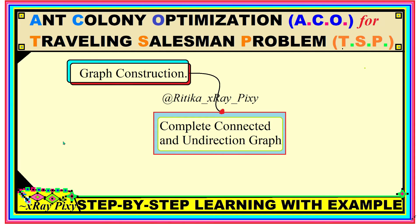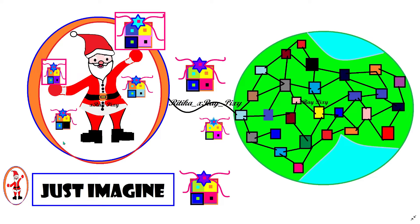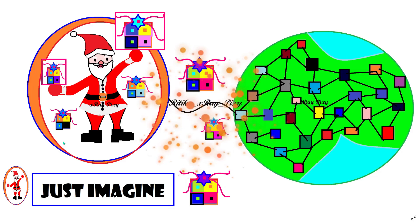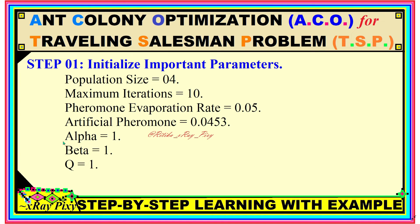We will construct a complete, connected, and undirected graph. To illustrate — just imagine Santa Claus living somewhere in space, wanting to visit all countries on Earth on Christmas, with the constraint that he visits each country exactly once. We need to find the shortest route for Santa that covers the minimum distance. Now we will understand how to solve the Traveling Salesman Problem using Ant Colony Optimization with a numerical example.